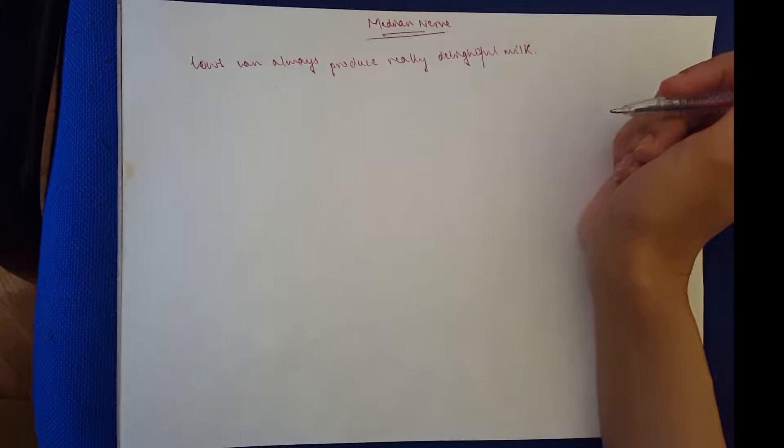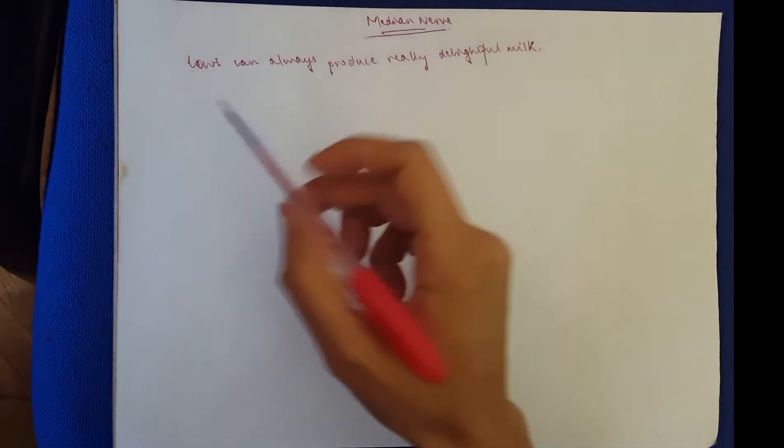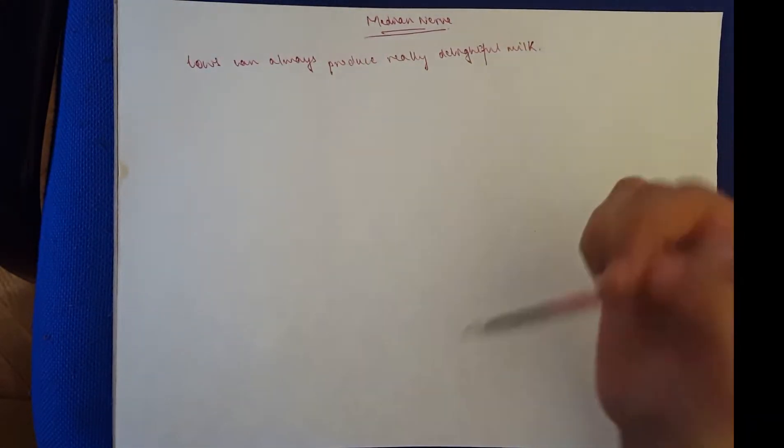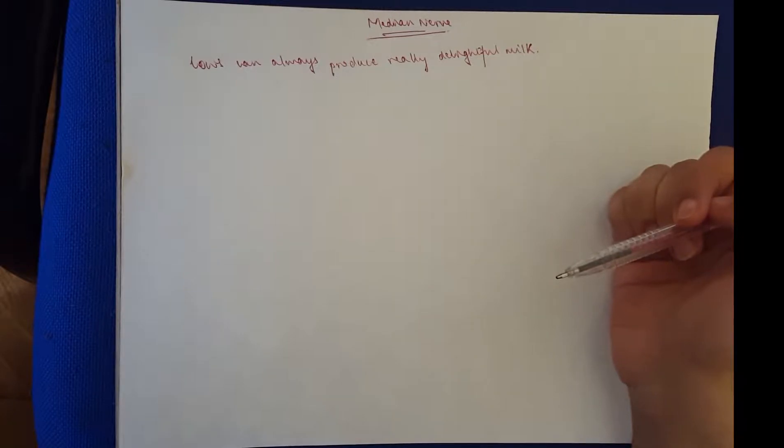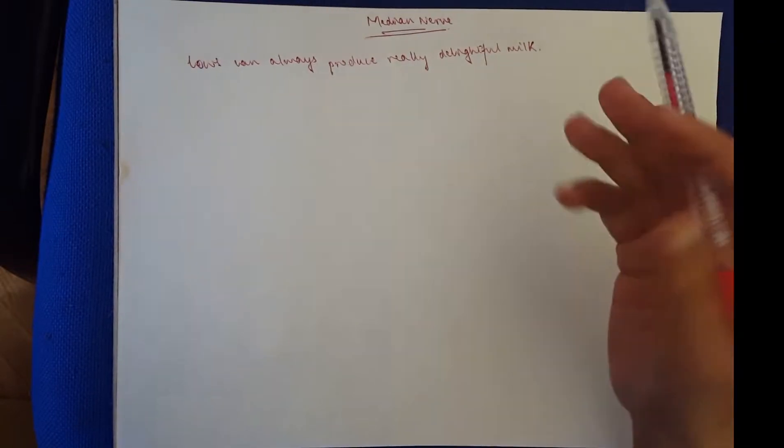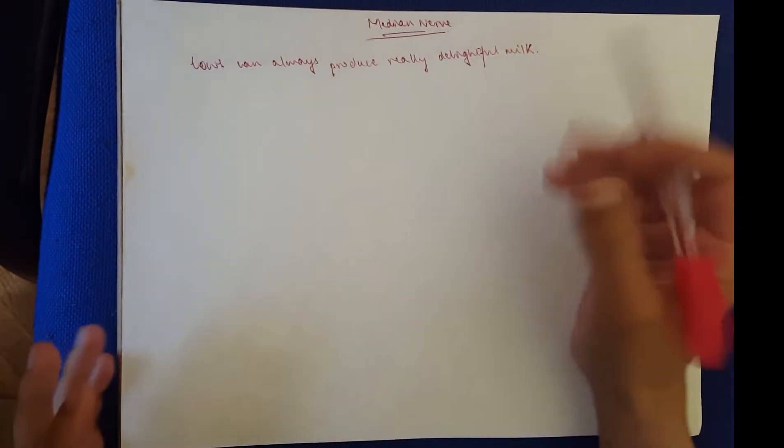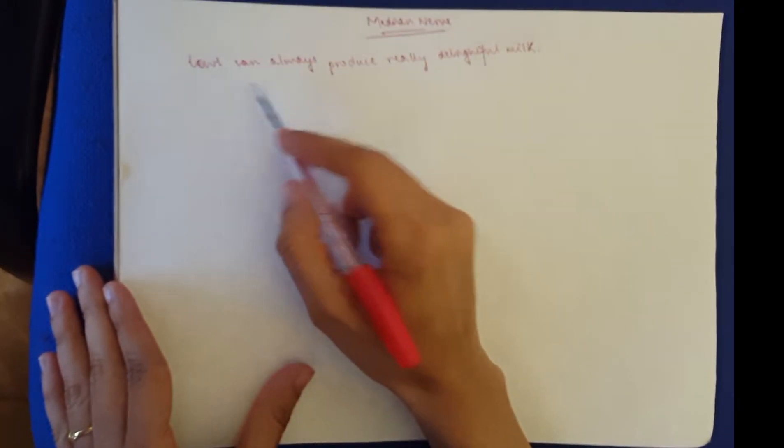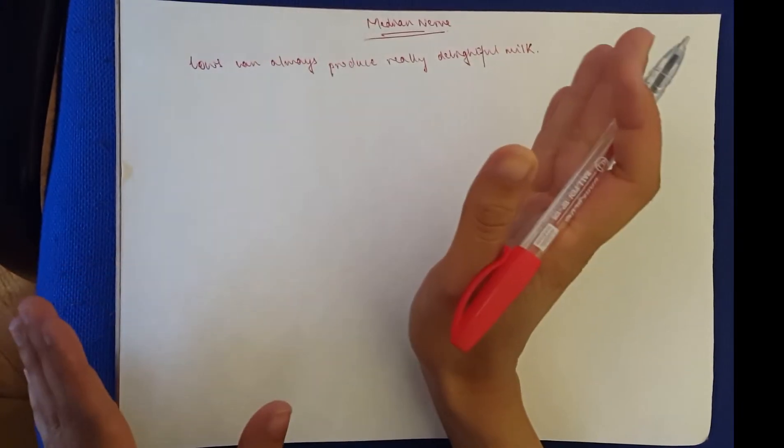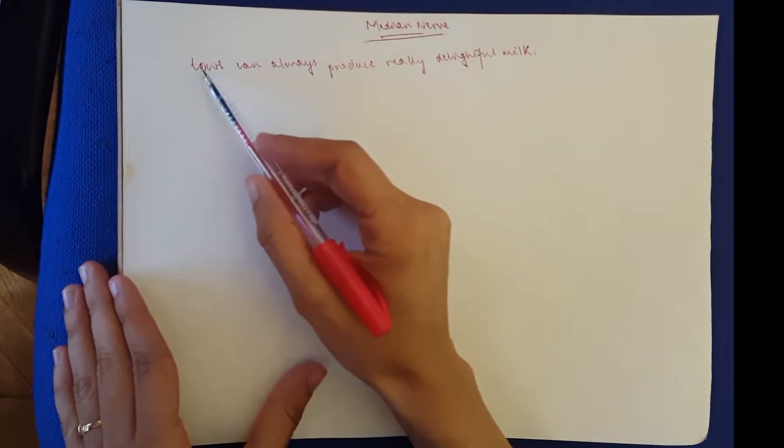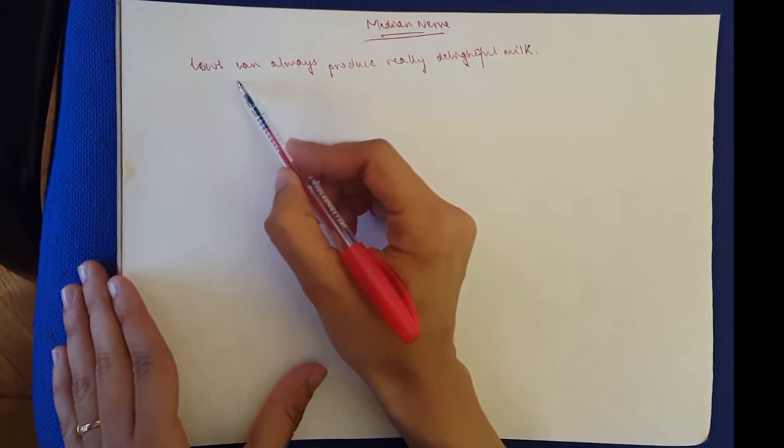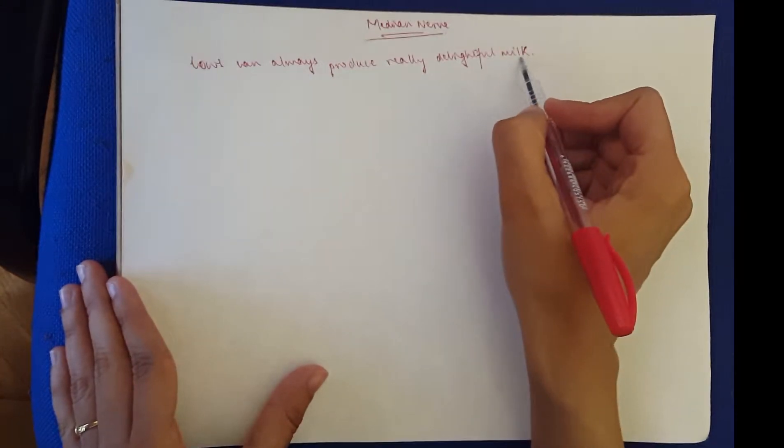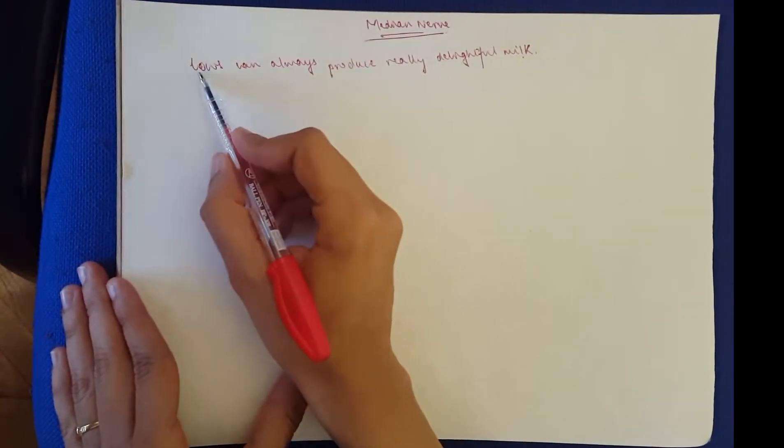If you've watched my previous videos, you know that I always start with the root of the nerve and then go on to the branches and the muscles or skin area that it innervates. So do not get confused with the mnemonic. When you learn the mnemonic, please know that I always start with the root and then go on to the innervation.